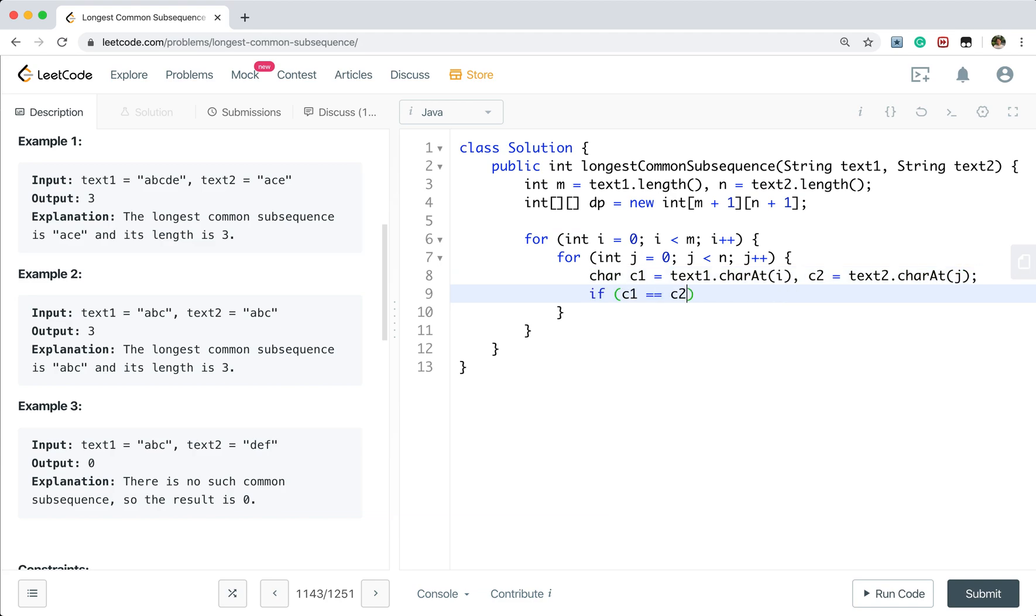So if c1 equals c2, DP[i+1][j+1] will be DP[i][j] plus 1.